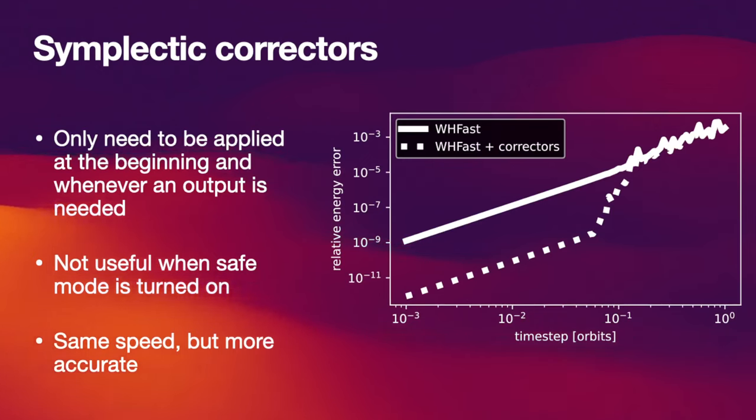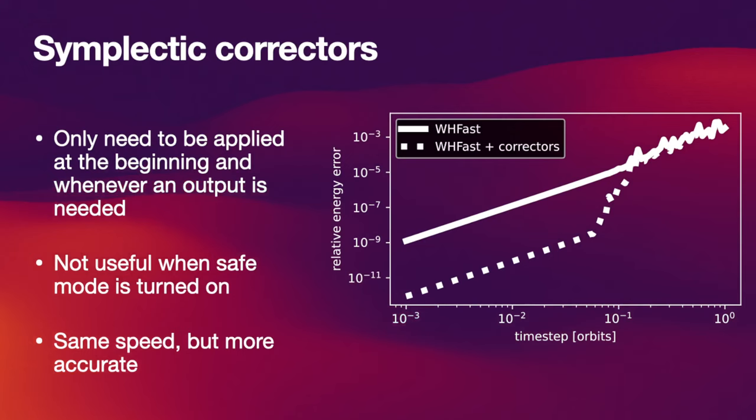What these symplectic correctors can achieve is a significant increase in accuracy. And because they only need to be applied at the very beginning and at the very end, you basically have the same speed as with the normal Wisdom Holman method. You just have a more accurate result in the end.